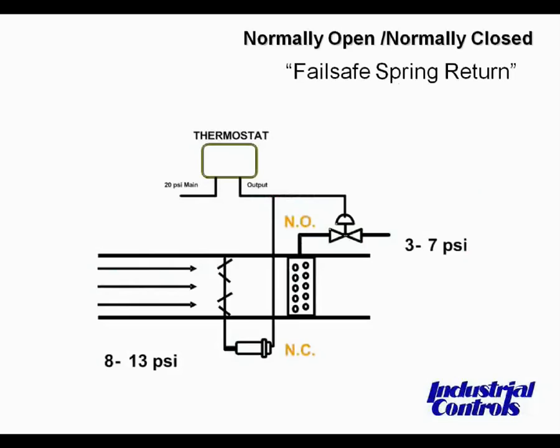Next we're going to talk about the fail-safe spring return positions. Because there is a spring in every pneumatic control device, the device will return to one end of its stroke upon system pressure loss. That position is termed the fail-safe position. It can either be normally open or normally closed, depending on the desired action. Shown here in this simplified drawing is a heating valve whose fail-safe position is in the normally open position to the heating coil, and an outside air damper actuator whose fail-safe position is normally closed.